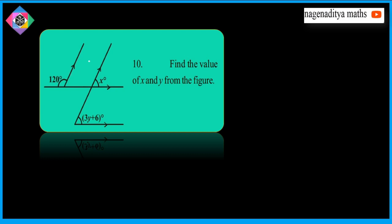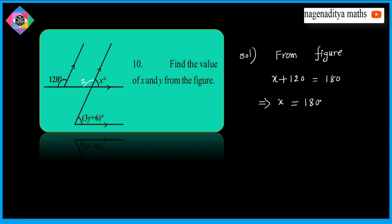In the diagram, these two lines are parallel and this is a transversal. Suppose this angle is Z, then 120 is equal to Z. But Z plus X equals 180 because of the linear pair of angles. From figure, X plus 120 is equal to 180, so X is equal to 180 minus 120, that is 60 degrees.